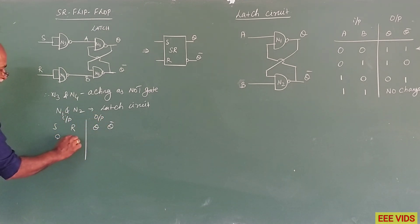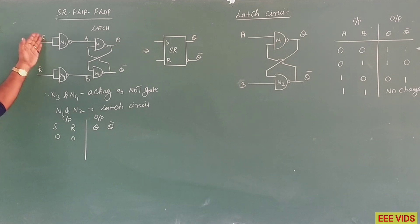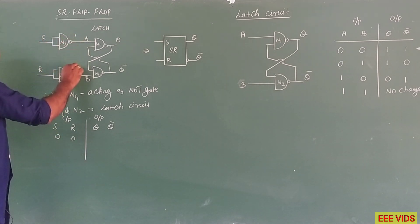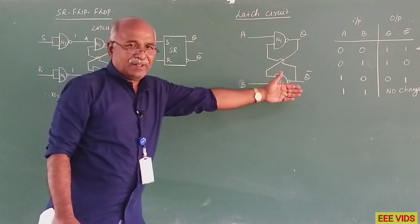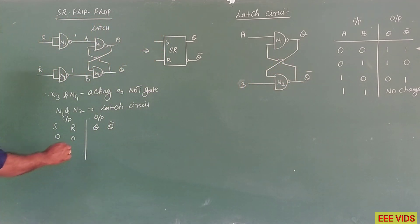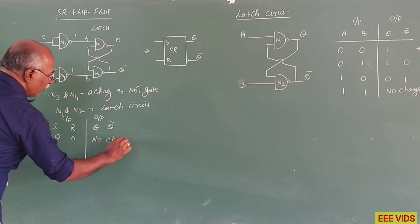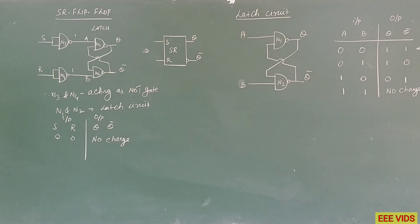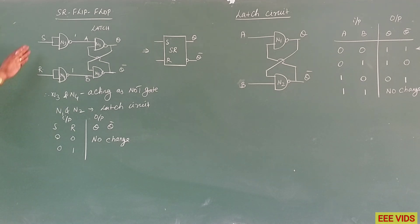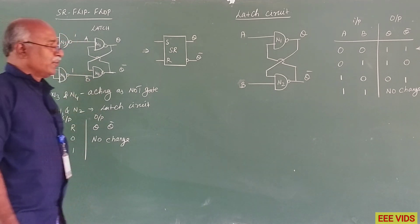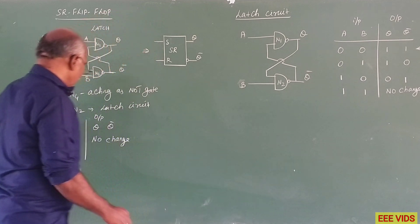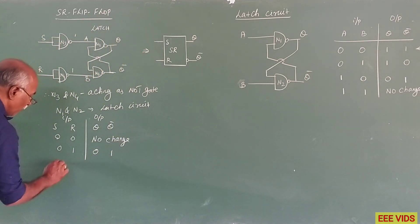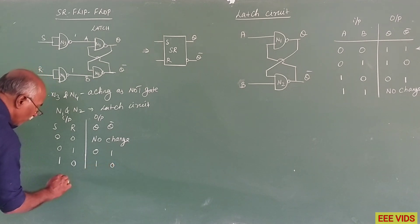So S input 0, R input 0. Now n3 and n4 are acting as a NOT gate. You can take 0,1 then 0,1 works. You can take 0,1, then output is 0, then 1. Then you can take 0, A1, B0. A1, B0 is 0,1. In the latch circuit, output will take 0,1. You can take 1,0, then you will take 1,0. Then you take 1,1.